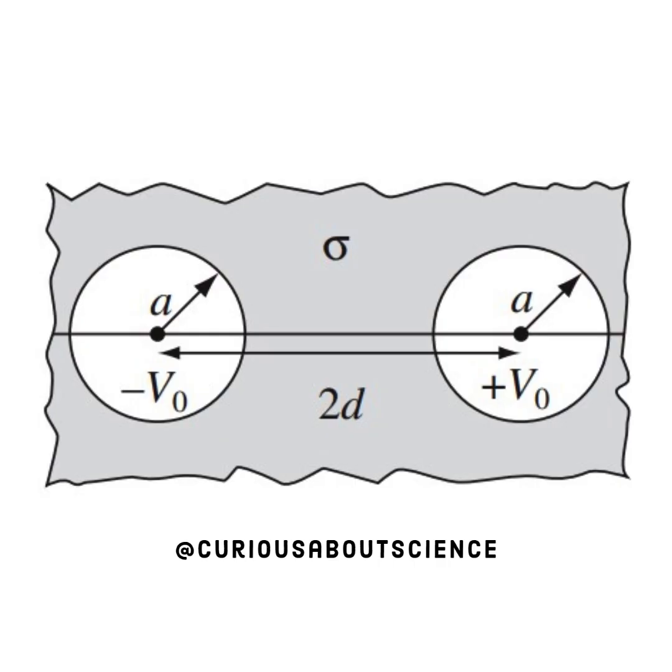Alright, let's draw it out. As you see, we have the negative to the left and the positive potential to the right, radius A, conductivity sigma, and separated by a distance of 2D. Does this look familiar at all? Because it should.